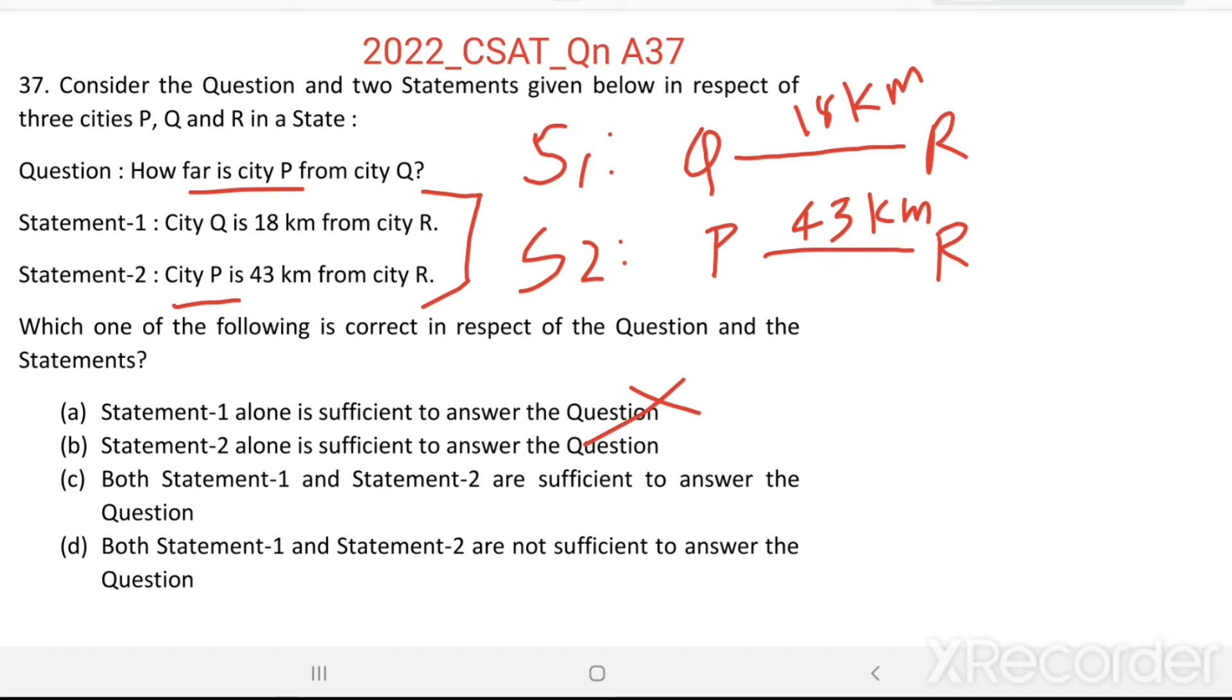So, from the second statement alone, we cannot find the distance between city P and city Q. Therefore, statement 2 alone is sufficient to answer the question. This also we can eliminate.